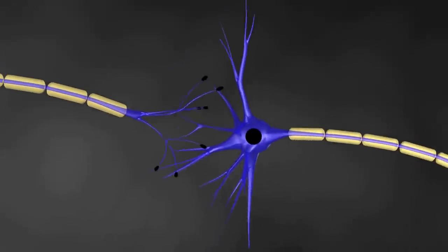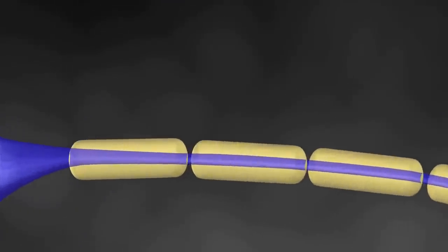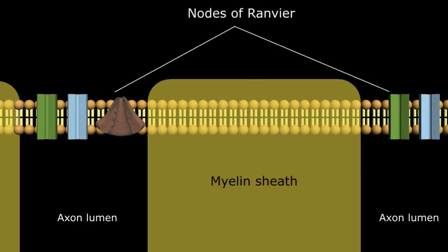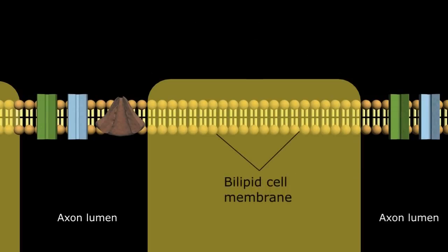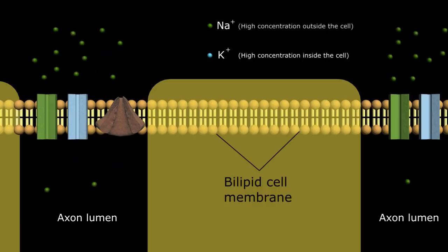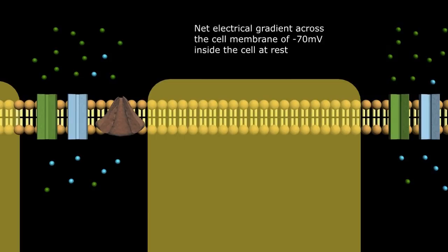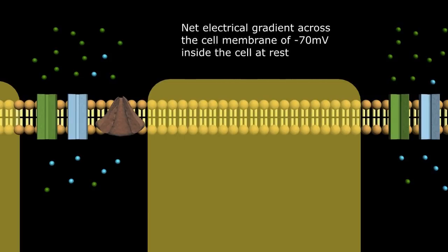Now let's look at the details of neuronal impulse generation at the nodes of Ranvier and the postsynaptic dendrites. In a resting nerve cell, the bilipid membrane of the cell body and axon maintains an osmotic gradient of sodium and potassium ions, with a high concentration of potassium ions inside the cell and a higher concentration of sodium ions outside the cell. Both ions are positively charged. However, since the concentration of positively charged sodium ions is greater than the concentration of the positively charged potassium ions inside the cell, there is a net gradient across the membrane measuring minus 70 millivolts inside the cell at rest.